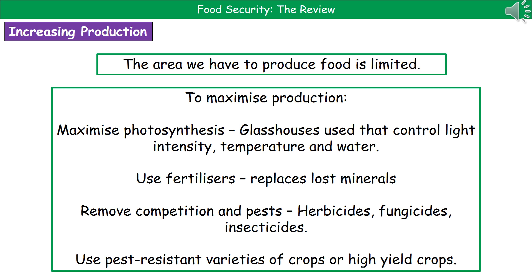Using glasshouses — or greenhouses as they're commonly known, as OCR refers to them — we can control light intensity, temperature, water, and carbon dioxide levels to maximize the rate of photosynthesis and make plants grow faster. We can also use fertilizers to replace lost minerals from the soil, preventing smaller plants or poor fruit growth.